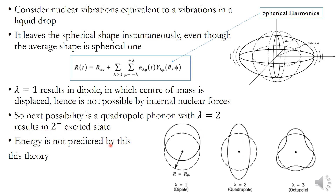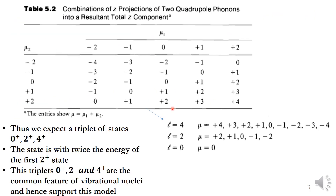The energy of this vibrating nucleus is not predicted by this theory. Each quadrupole phonon carries two units of angular momentum and can have five projections: μ = −2, −1, 0, +1, +2, just like the (2L+1) components of angular momentum.